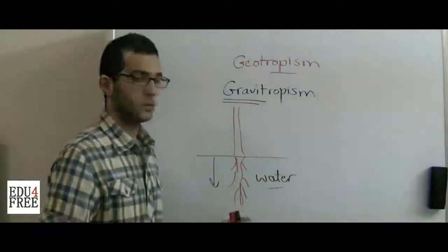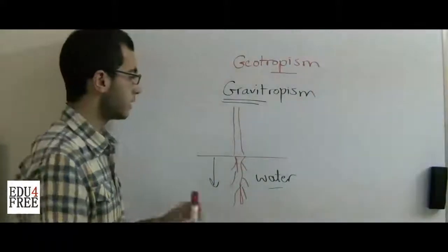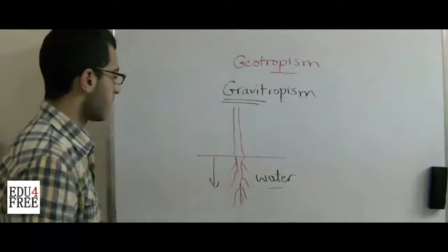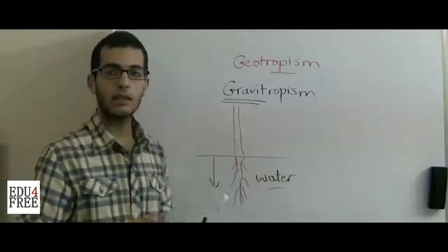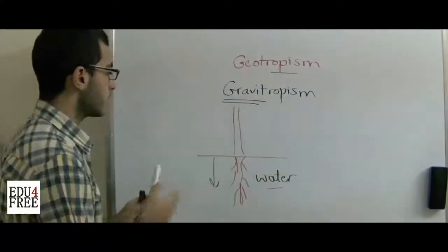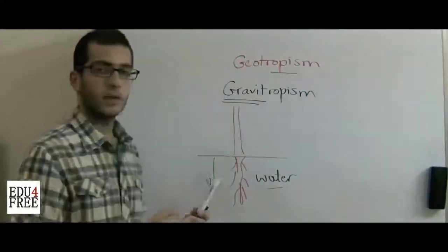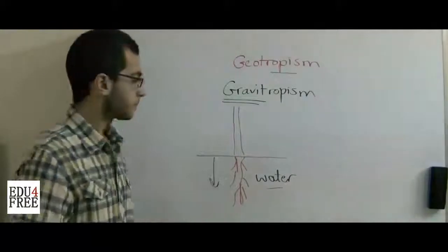So what made the root grow into this vacuum, growing just downwards? This is because of the effect of gravity.